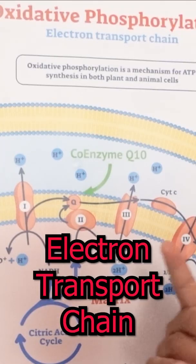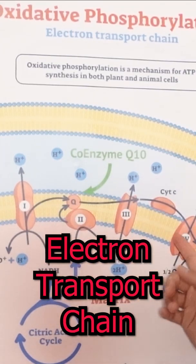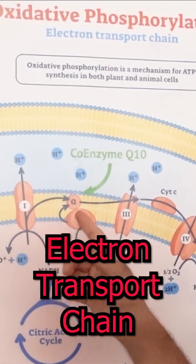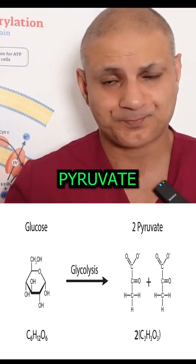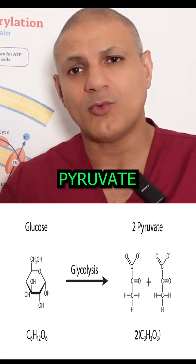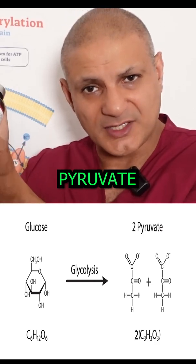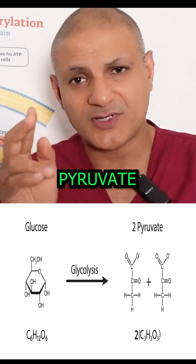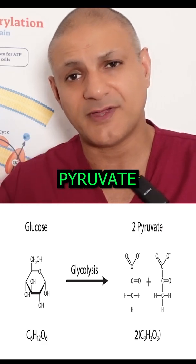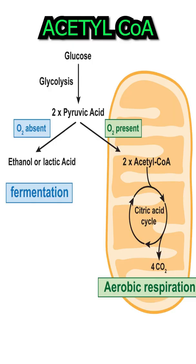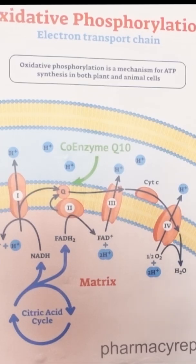The electrons enter something called the electron transport chain, which is in the inner membrane of the mitochondria. Before we can transfer the glucose electrons to the mitochondria, we first need to convert that glucose into pyruvate, then acetyl coenzyme A. It's that acetyl coenzyme A which joins the citric acid cycle in the matrix of the mitochondria.